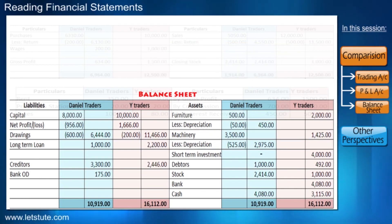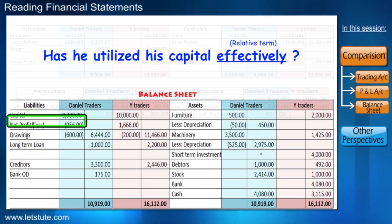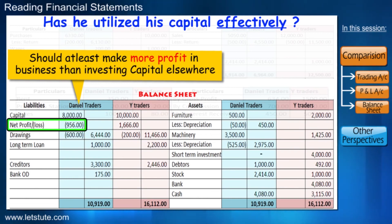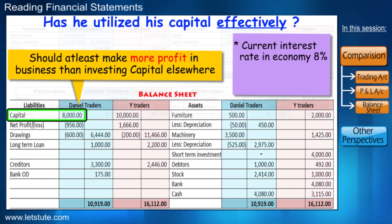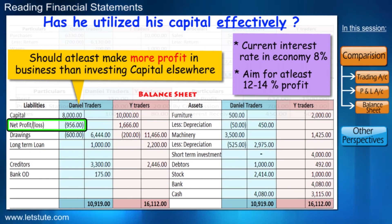Has Daniel utilized his capital effectively? He is having a net loss in his first year of operation. Normally he should at least be able to make more profit than what he would get by keeping the capital in a fixed deposit or investing elsewhere. Assuming the prevalent interest rate in the economy is 8 percent, Daniel should at least be making 12 to 14 percent profit, because he is putting in so much effort and taking risks as a businessman in addition to investing his capital.